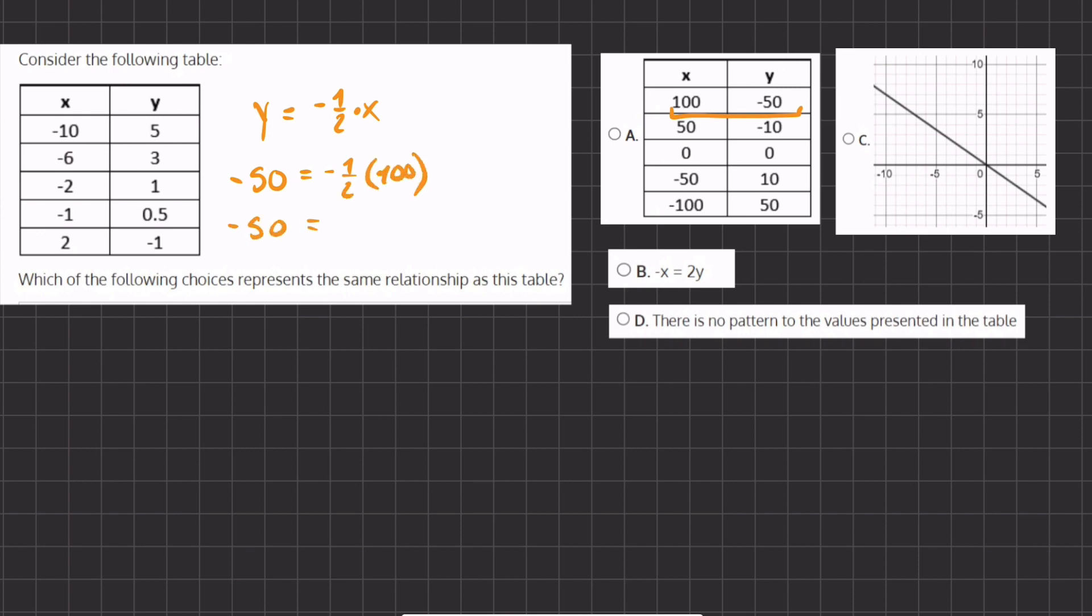Alright, so we have negative 50 equals negative half of 100 will also give us negative 50. So this first point is correct. Let's move on and check another point.